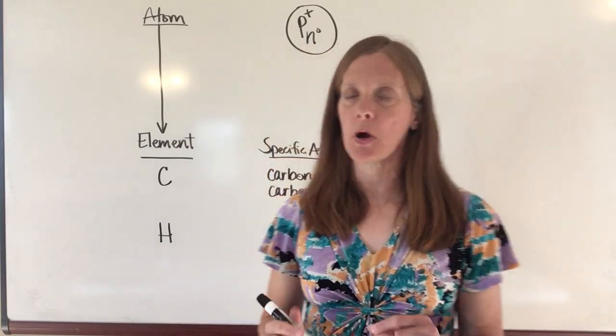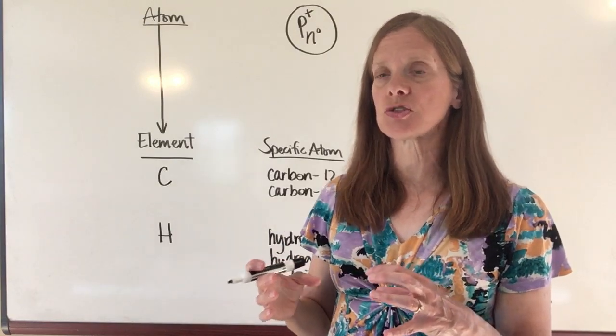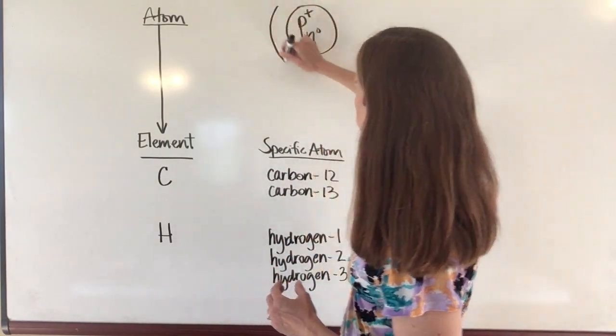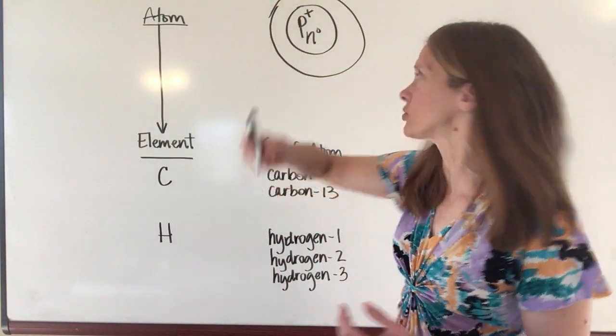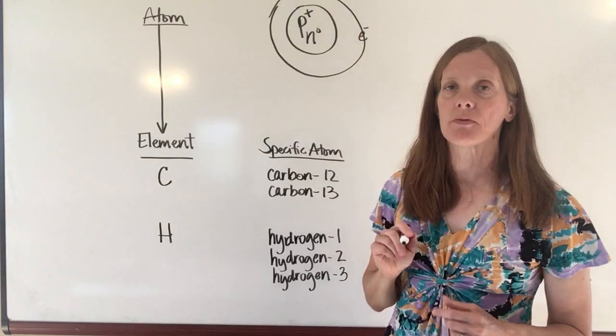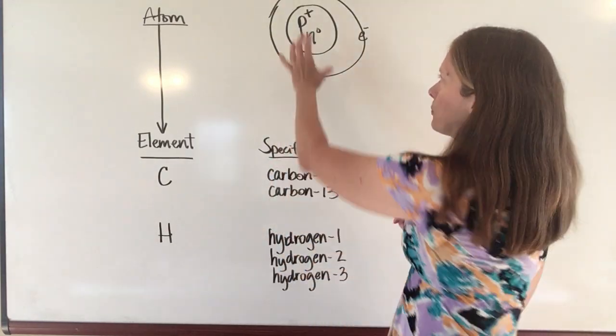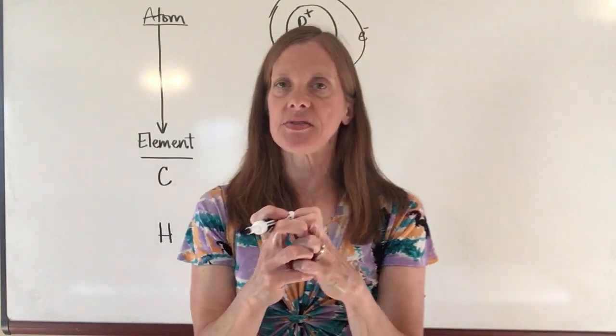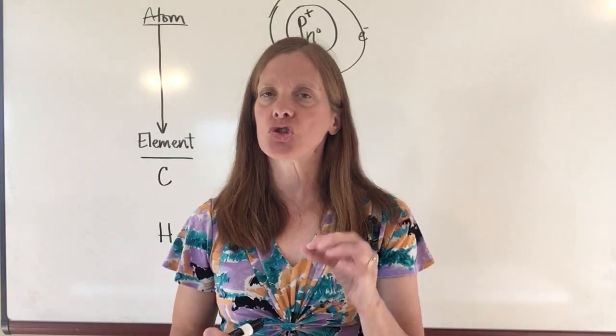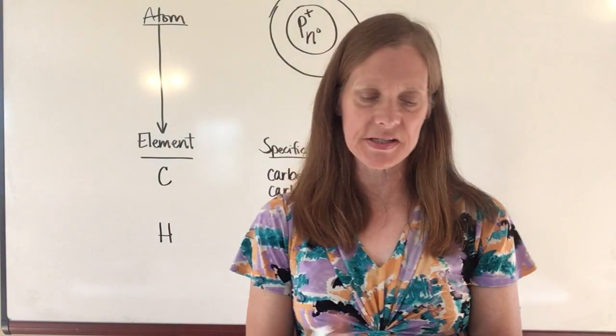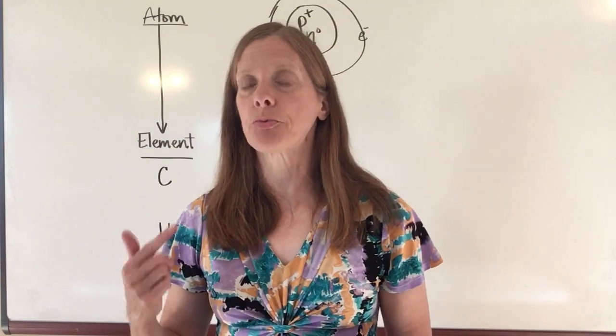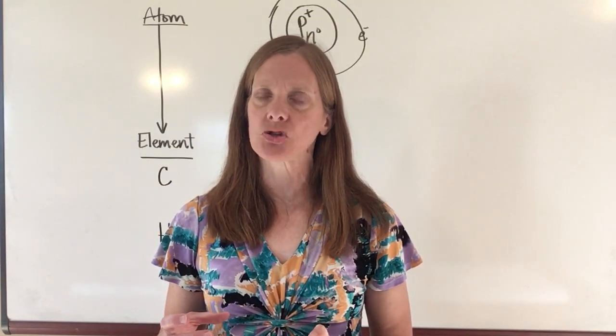There is another subatomic particle that orbits or kind of rotates around the nucleus of the atom, and that's called the electron. The electron has a negative charge to counterbalance the positive charge of the protons inside. The electrons do have some mass, but it's so small in comparison it would actually take 1,847 electrons to make up the mass of one proton. So the mass of the electrons is actually negligible.